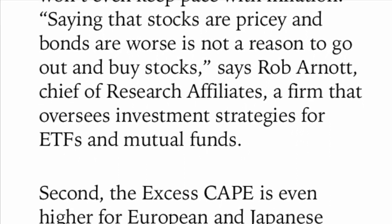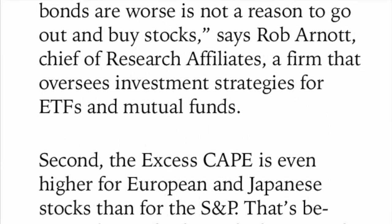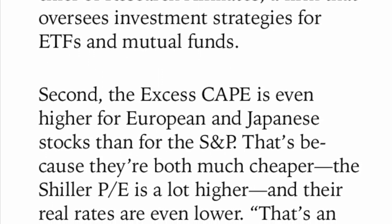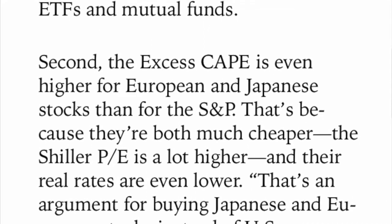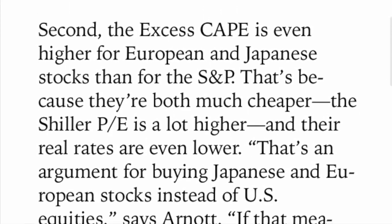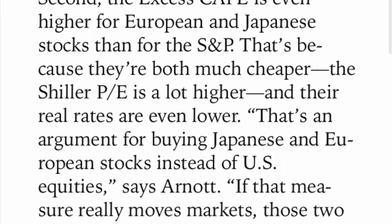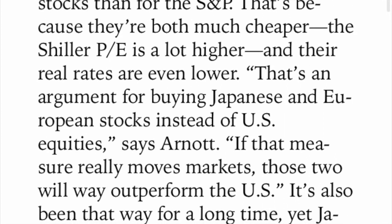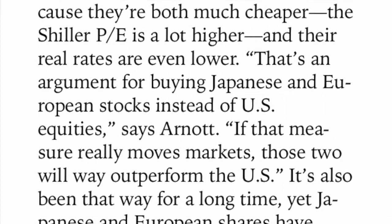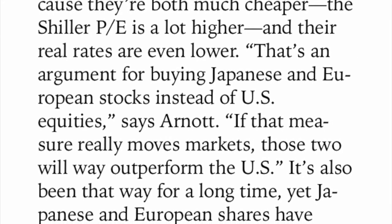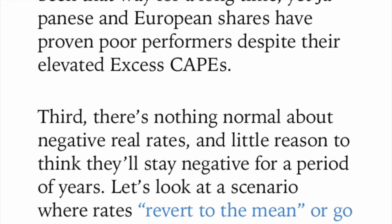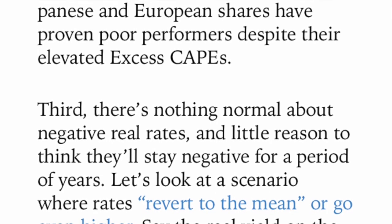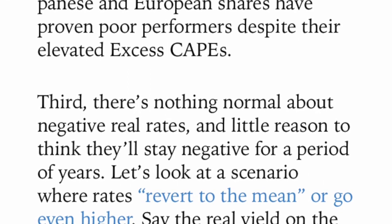Point number two: the Excess CAPE is even higher for European and Japanese stocks than for the S&P 500 — and that's because they're both much cheaper and their real rates are even lower. That's an argument for buying Japanese and European stocks instead of US equities, says Arnott. If that measure really moves markets, those two will way outperform the US. Yet Japanese and European shares have proven poor performers despite their elevated Excess CAPEs. So it doesn't seem to be true on that point — the Excess CAPE told us those equities should be doing great, and they haven't been.